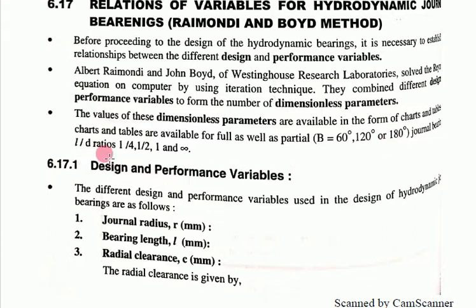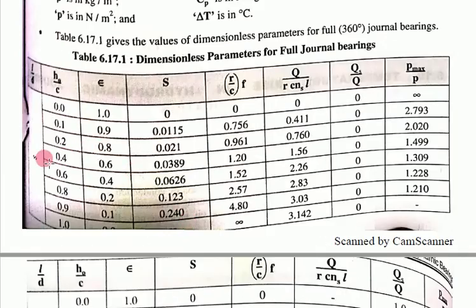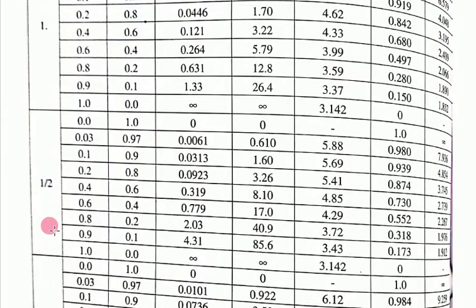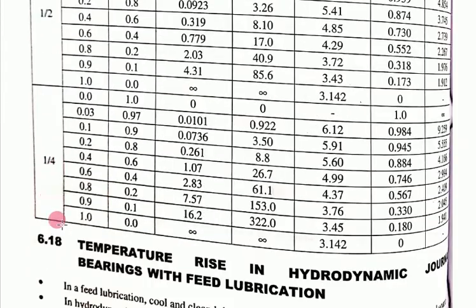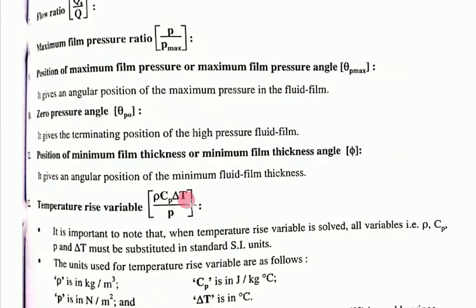In the chart, we have L/D ratio in the form of one-fourth, one-half, one, and infinite. This chart shows the infinite L/D ratio, as well as values for one, one-half, and one-fourth. From this chart, parameters such as Ho/C, eccentricity ratio (e), Sommerfeld number (S), and R/C·f are all defined.